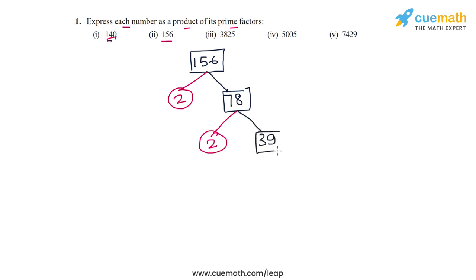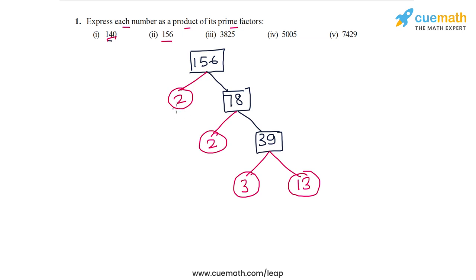Now 39 is not divisible by 2, but it is a multiple of 3. Taking out 3, the remaining part is 13, which is prime. So the prime factorization is complete, and 156 has the prime factors 2, 2, 3, and 13. Therefore, 156 can be written in prime factorized form as 2² × 3 × 13. That completes part 2.